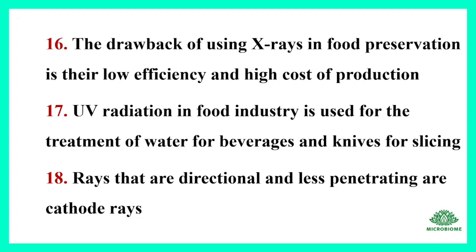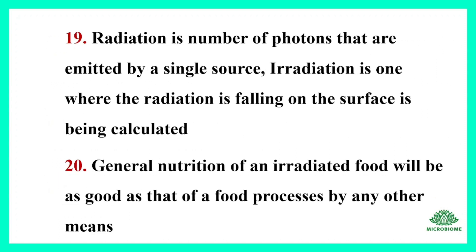UV radiation in the food industry is used for the treatment of water for beverages and knives for slicing. Cathode rays are directional and less penetrating. Radiation refers to the number of photons emitted by a single source.